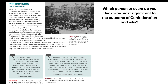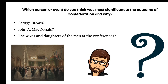Confederation did not consult with Indigenous people — they had no part in the decision to create the Dominion of Canada. All control over Indian affairs was given to the federal government, allowing them to decide what happens to Indigenous land and peoples. As you heard in the podcast about the Indian Act, there was not a lot of freedom given to the Indigenous population. So the question to consider is: which person or event do you think was most significant to the outcome of confederation — George Brown, John A. MacDonald, or perhaps the wives and daughters whose informal roles ultimately helped the men reach an agreement?